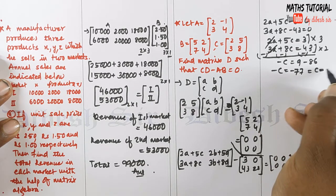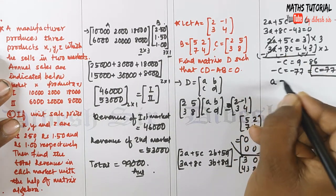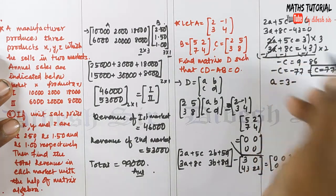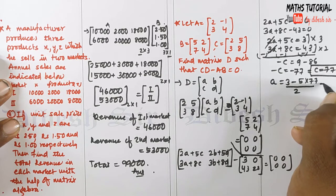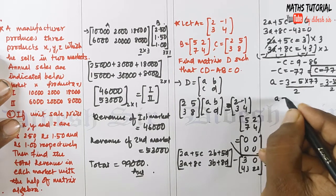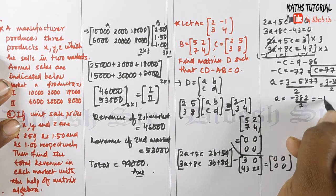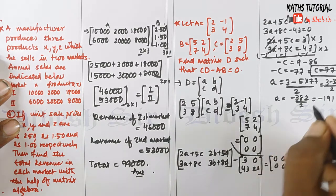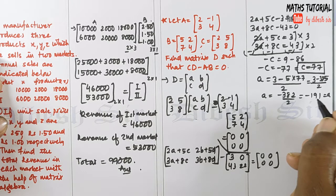Substituting C = 77 back into 2A + 5C = 3: A = (3 - 5×77) / 2 = (3 - 385) / 2 = -382 / 2 = -191. So A equals minus 191.